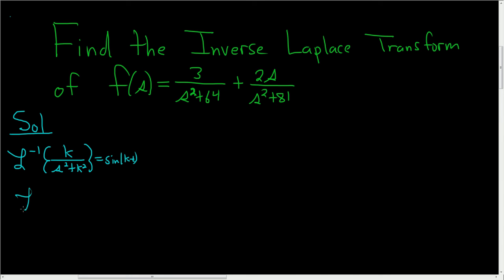And then we have the inverse Laplace transform of s over s squared plus k squared. This is simply cosine of kt. So cosine has the s. Cosine has the s. That's how I memorize it.